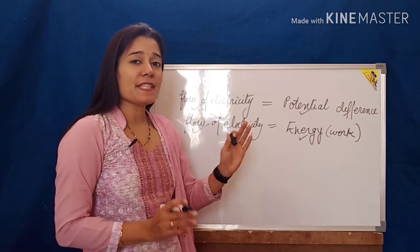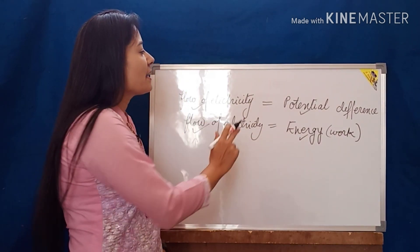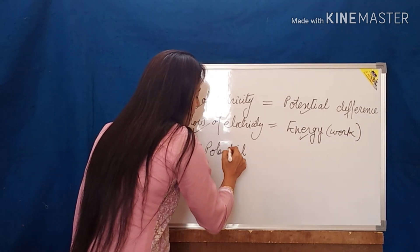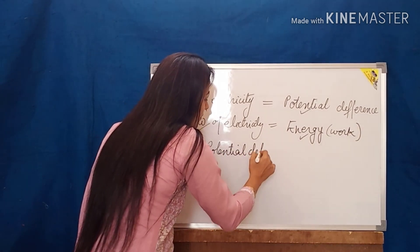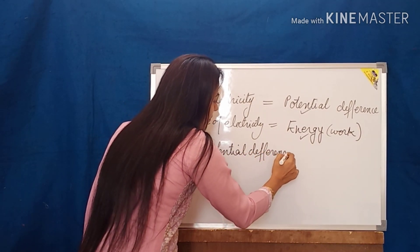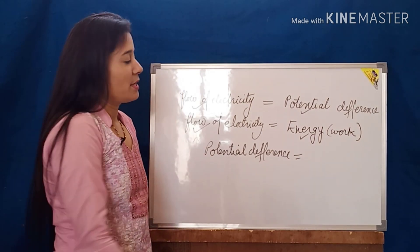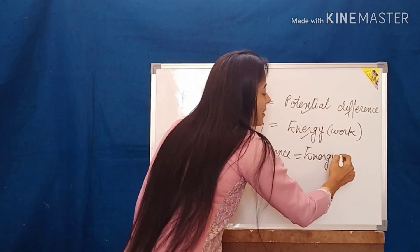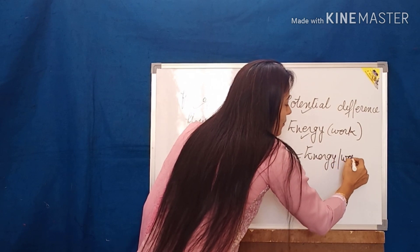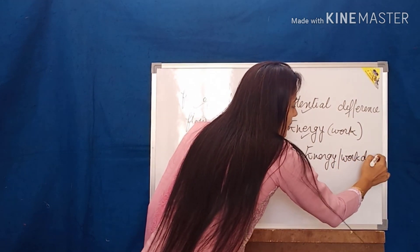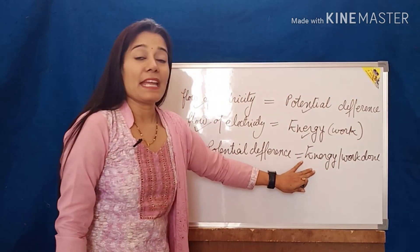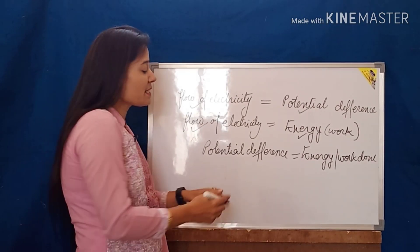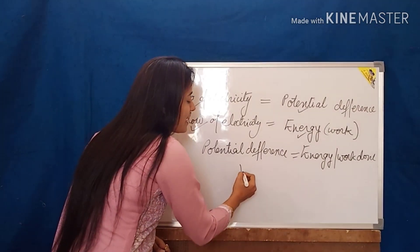From these equations we have derived that potential difference is equal to energy, or work done, because work done and energy are one and the same thing.